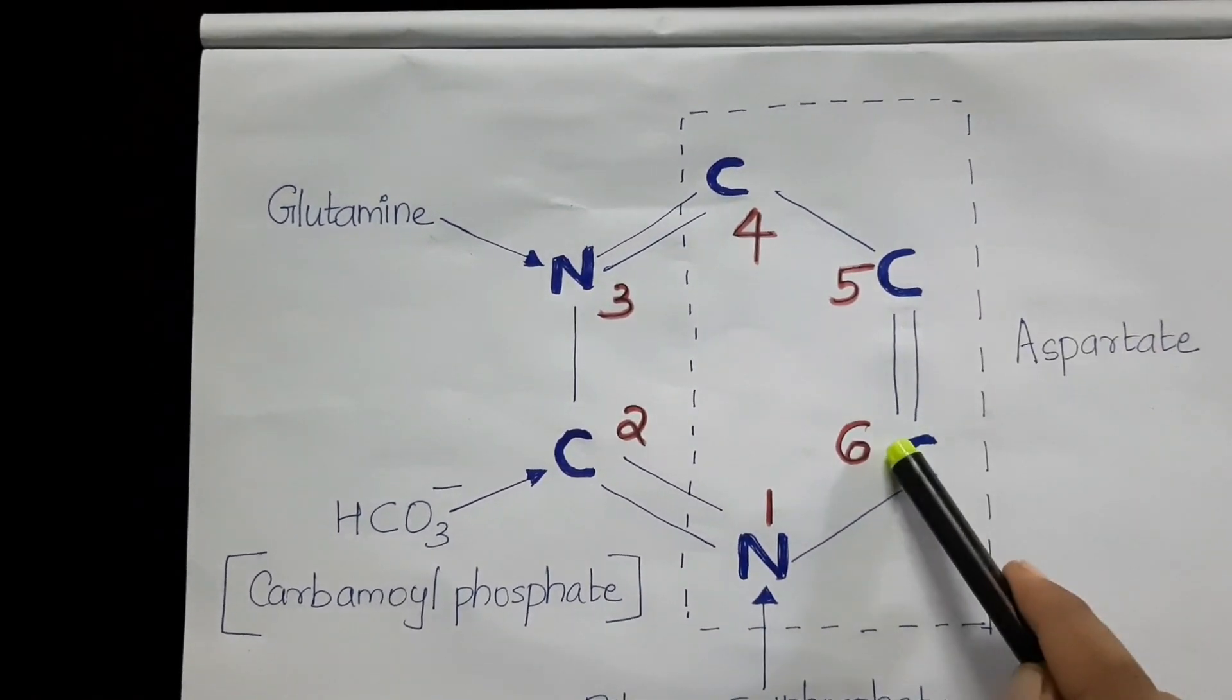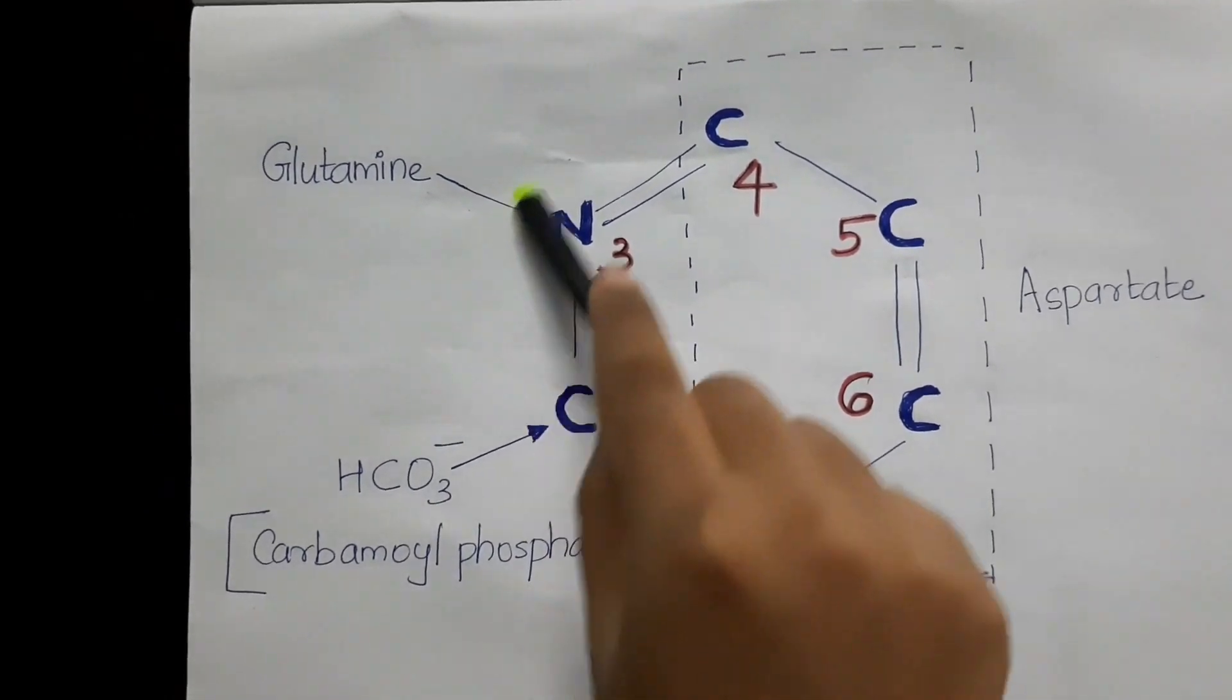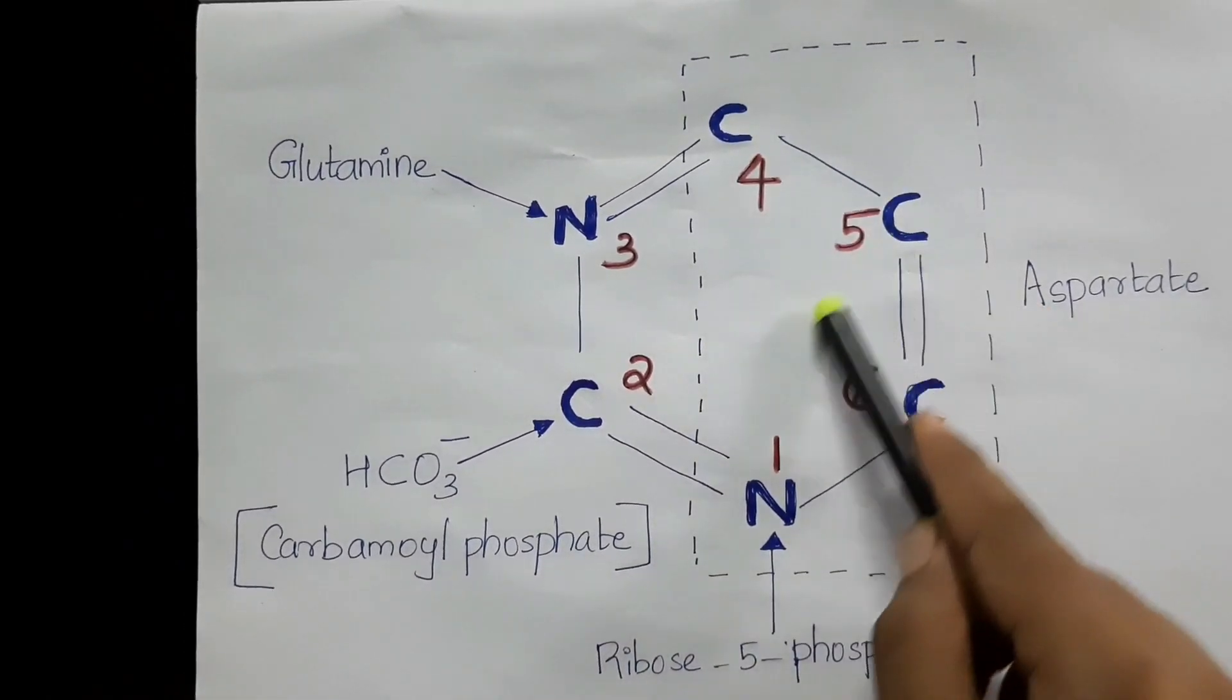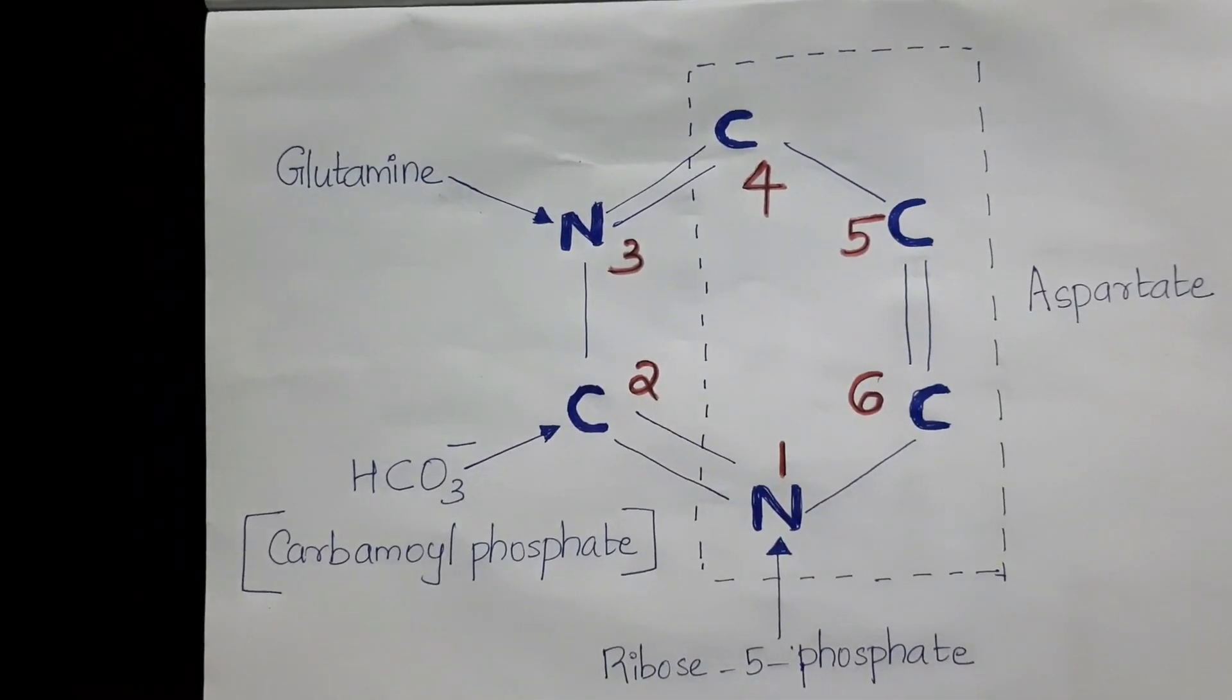How this is happening and what are the different reactions behind all these donations will be discussed in detail in a different lecture. I hope it's clear what are the different sources of carbon and nitrogen. First, you should memorize these, and later we will see in detail the biosynthetic pathways of purines and pyrimidines. We will see this in a different lecture. Thank you.